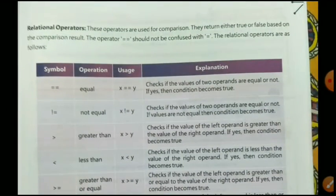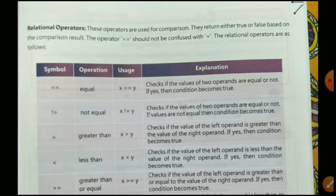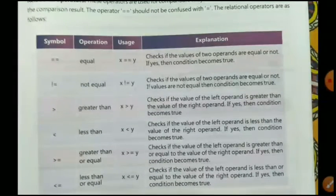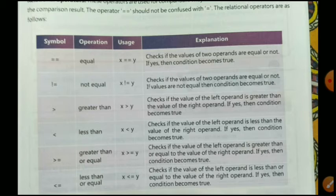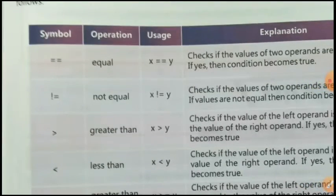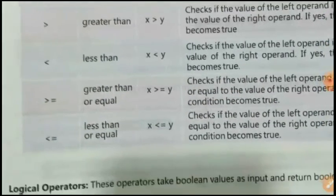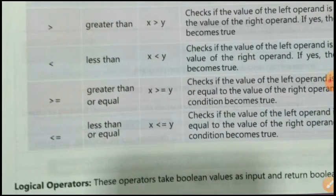Next are relational operators. These operators are used for comparison and return either true or false based on the comparison result. The operator '==' checks if the values of two operands are equal or not — if yes, the condition becomes true. Other relational operators include '!=' for not equal, '>' for greater than, '<' for less than, '>=' for greater than or equal to, and '<=' for less than or equal to.